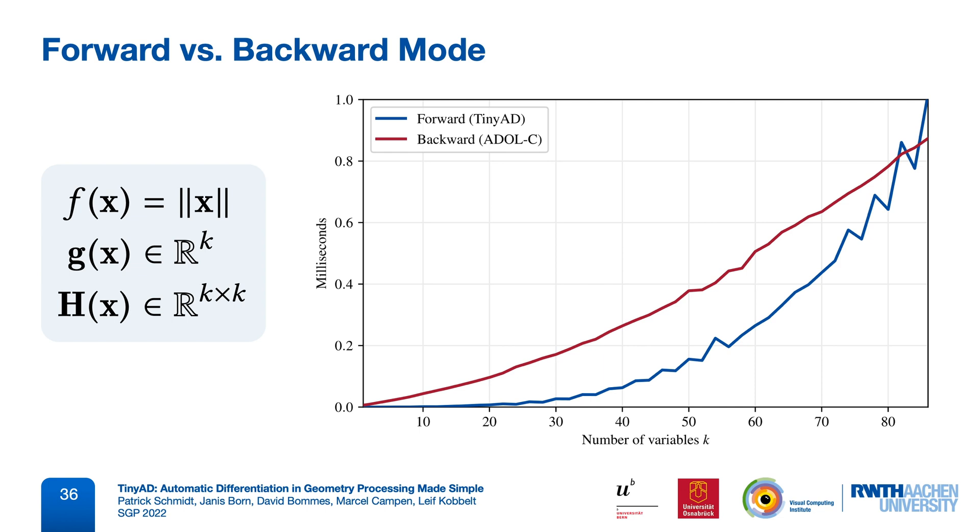For example, for small 6x6 Hessian matrices, forward mode was 70 times faster than backward mode in this experiment.